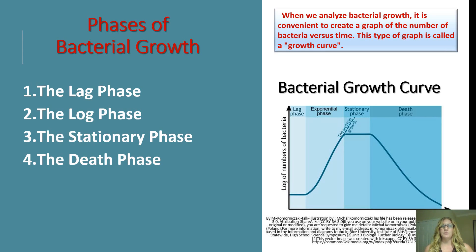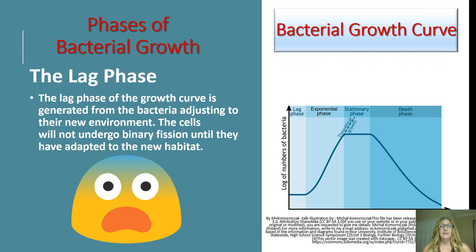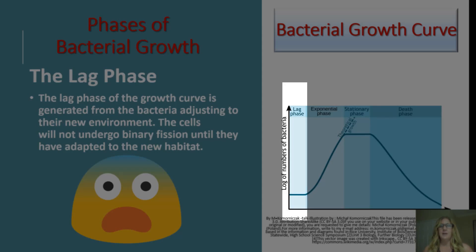When talking about bacterial growth, it's important to look at trends of the growth curve. We analyze bacterial growth by graphing the number of bacteria versus time, creating what's called a growth curve. The growth curve has four distinct phases: the lag phase, the log or exponential phase, the stationary phase, and the death phase. In the lag phase, bacteria need time to adjust to their new environment and will not undergo binary fission until they've sufficiently adapted.